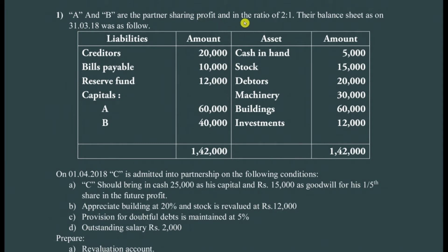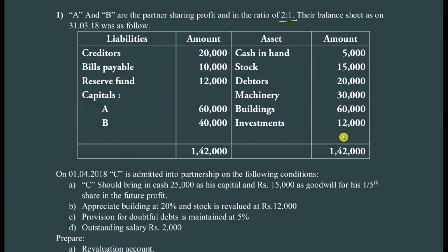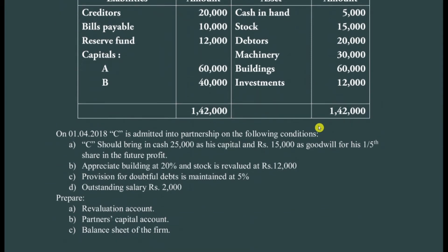A and B are partners sharing profit in the ratio of 2:1, and they are sharing profit on the basis of 3:1. The balance sheet as on 31st March 2018 was as follows — this is their balance sheet before admission of a new partner. They have creditors 20,000, bills payable 10,000, reserve fund 12,000, capital of A and B: 60,000 and 40,000. On the asset side: cash in hand 5,000, stock 15,000, debtors 20,000, machinery 30,000, building 60,000, investment 12,000 — overall 142,000.